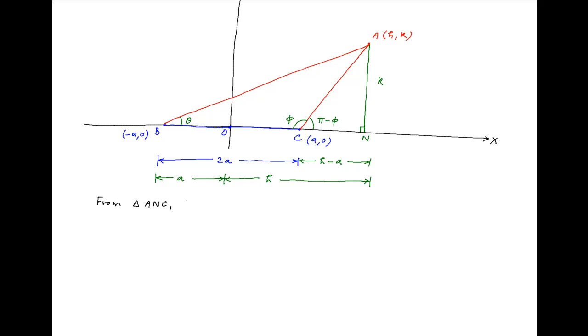Now from right angle triangle ANC, tan(π - φ) is equal to AN divided by CN which is equal to K divided by H minus A. And this implies that -tan φ is equal to K divided by H minus A.